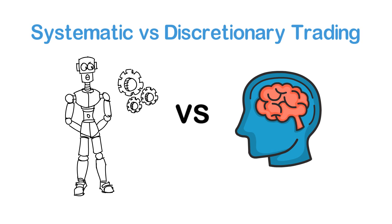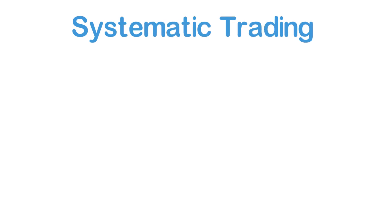Discretionary strategies, on the other hand, benefit from human intuition and all-around intelligence. That being said, let's start by breaking down the advantages of systematic trading.